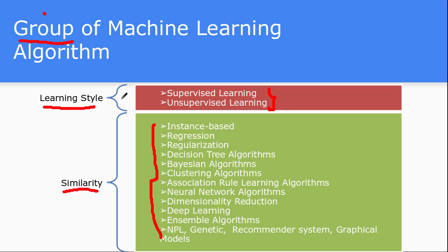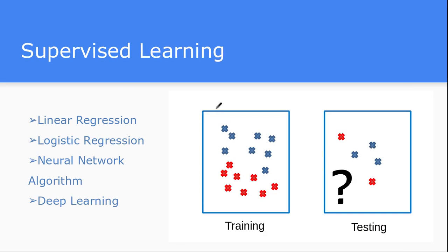In the learning style way of grouping machine learning algorithms, you can divide all classes of algorithms into two categories: either supervised learning or unsupervised learning. Let's concentrate on supervised learning first. Supervised learning is divided into two parts: a training part and a testing part.